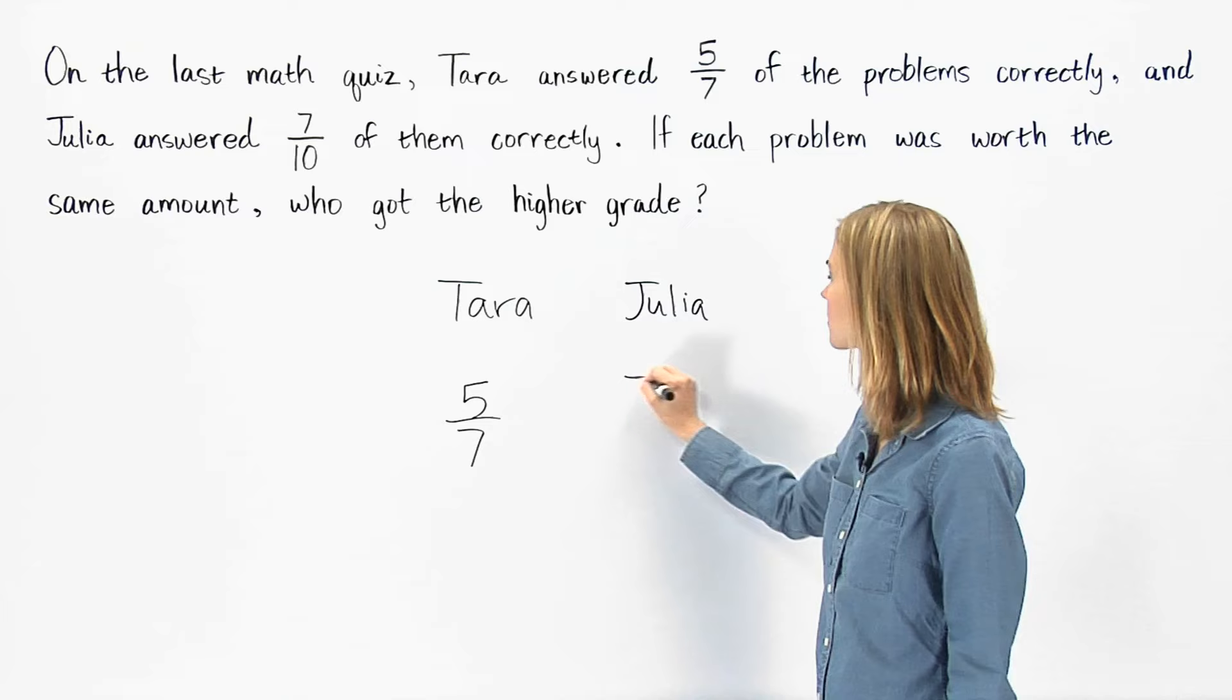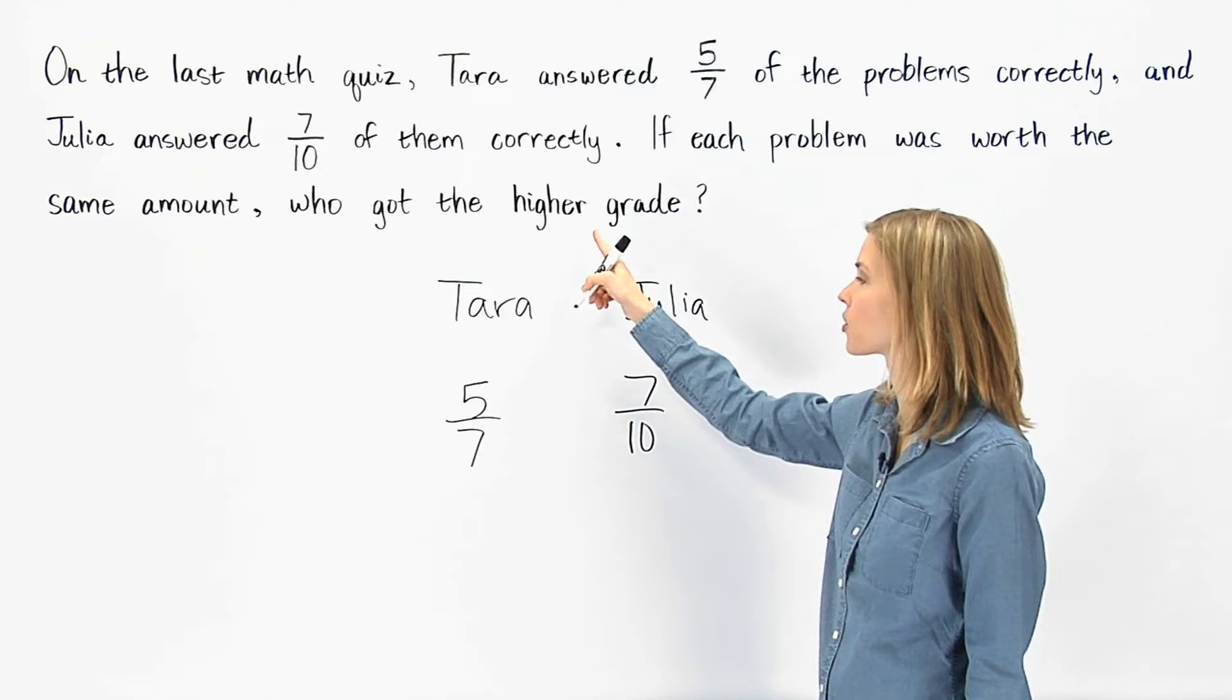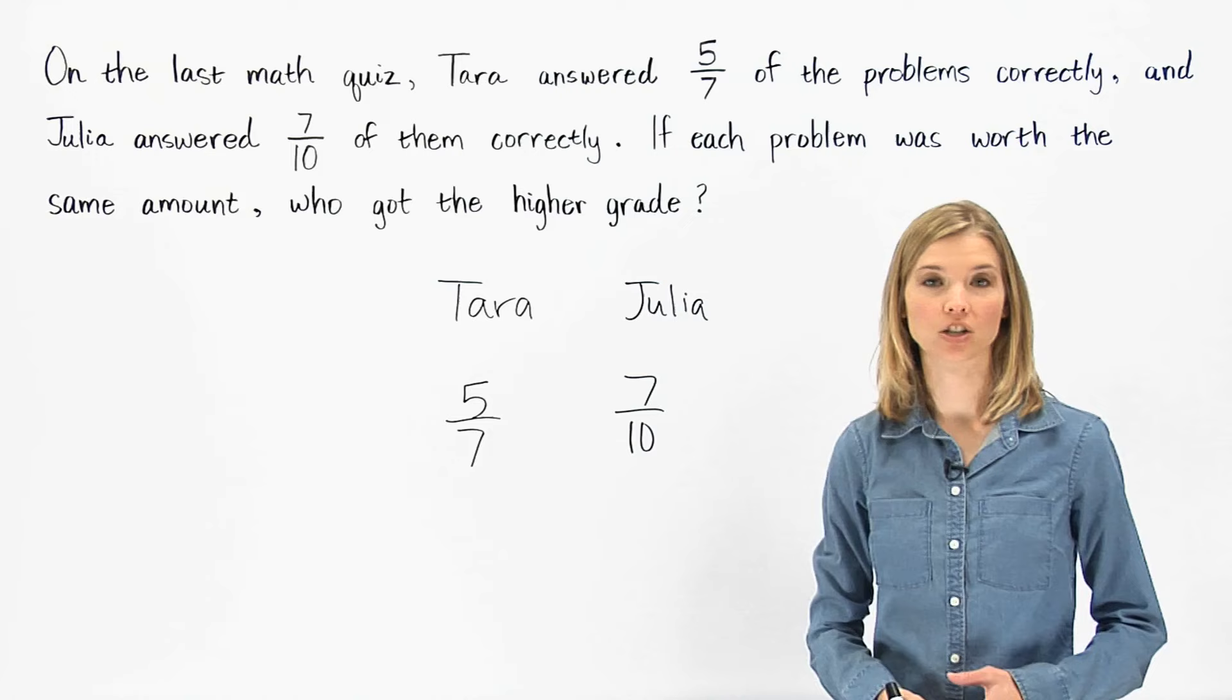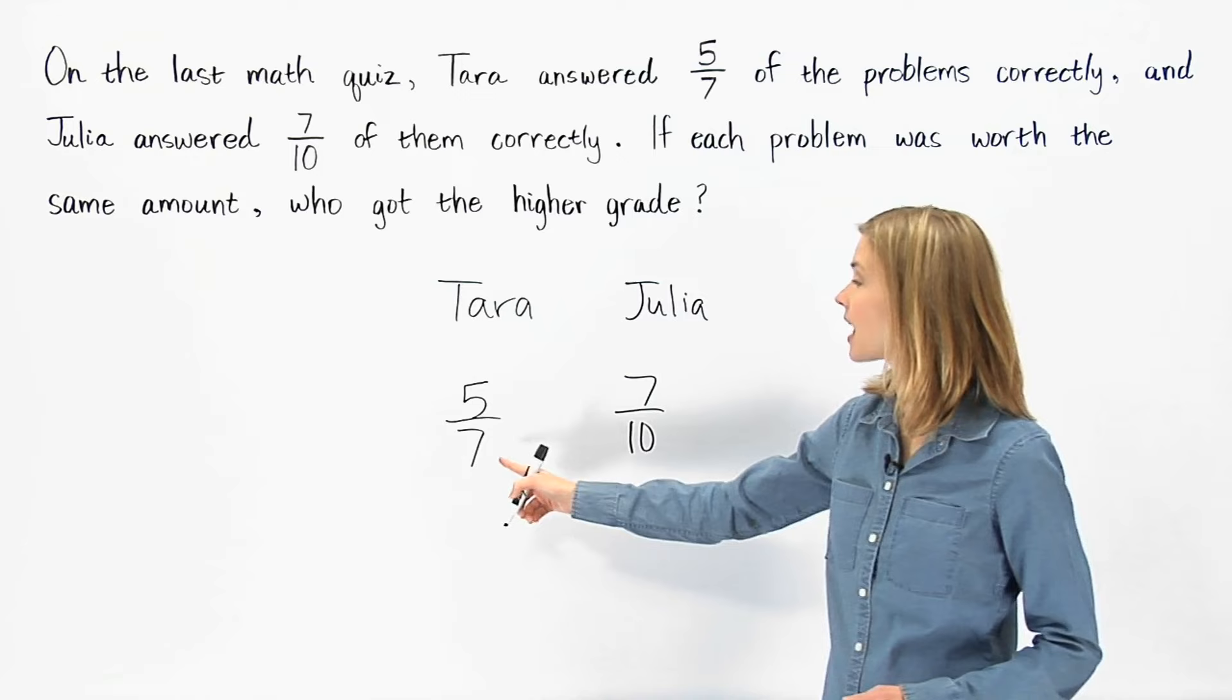The greater fraction will represent the higher grade. Notice that five-sevenths and seven-tenths are unlike fractions, so we need to find a common denominator. The common denominator of seven and ten is the least common multiple of seven and ten, which is seventy.